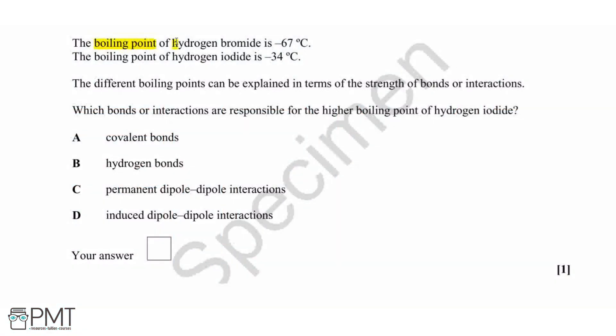The boiling point of hydrogen bromide is -67°C and the boiling point of hydrogen iodide is -34°C. We can explain the difference in these boiling points by the strength of the bonds or interactions.